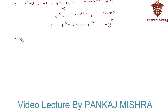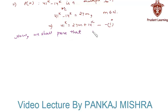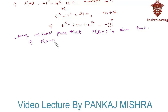In our last step we shall now prove that P(k+1) is also true. That is, P(k+1) equals 41 raised to k+1 minus 14 raised to k+1.